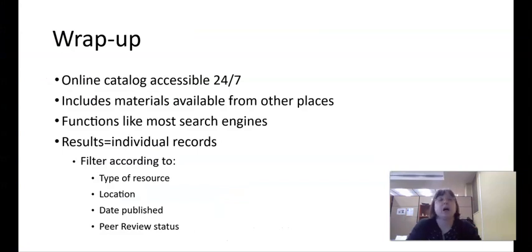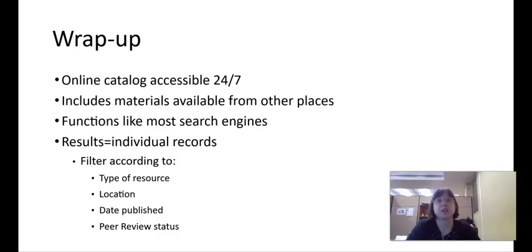To wrap it all up: our online catalog is accessible 24-7 from any computer with an internet browser. It includes materials available from other libraries, so definitely take a look at those to broaden your possibilities. It works like most search engines that you're familiar with — it's just very specific to our resources. Each of your results will be an individual item record, and you can filter them according to the type of resource, the location they're held in, the date they're published, and peer review status.